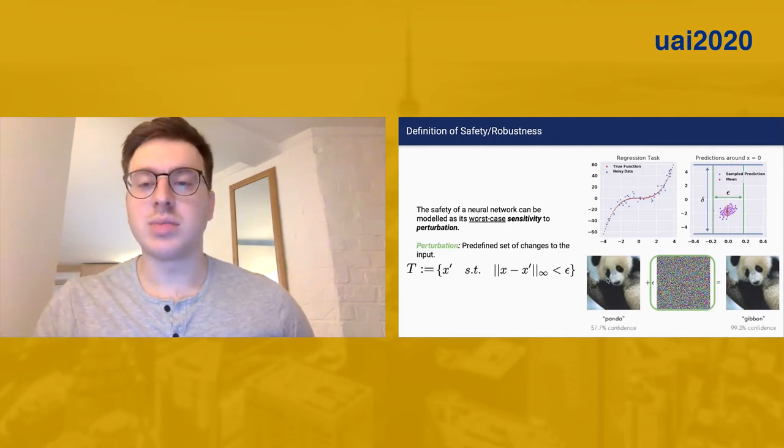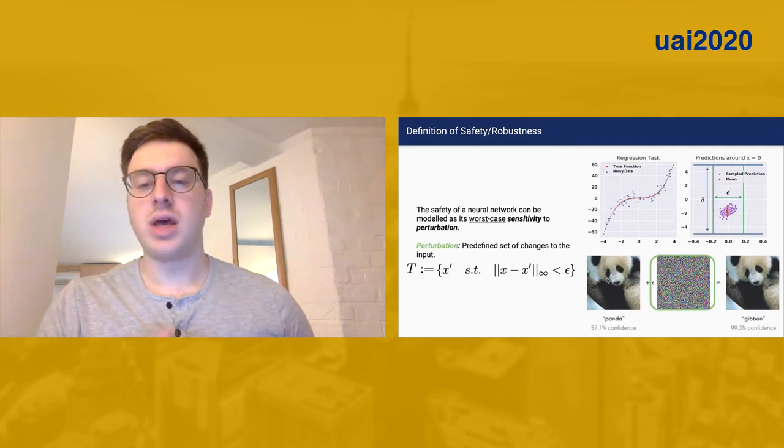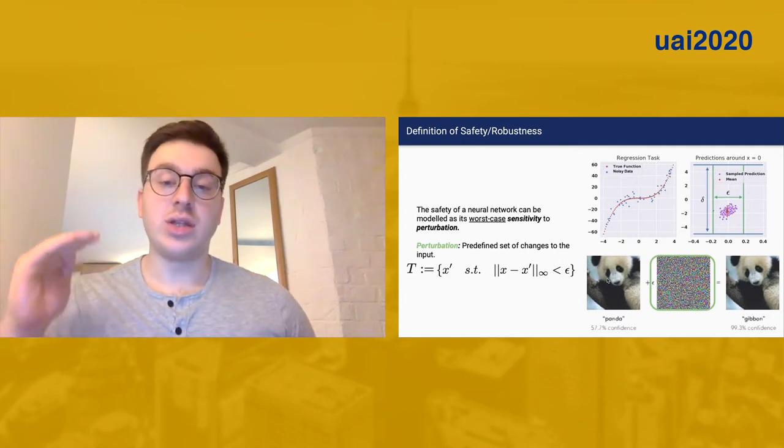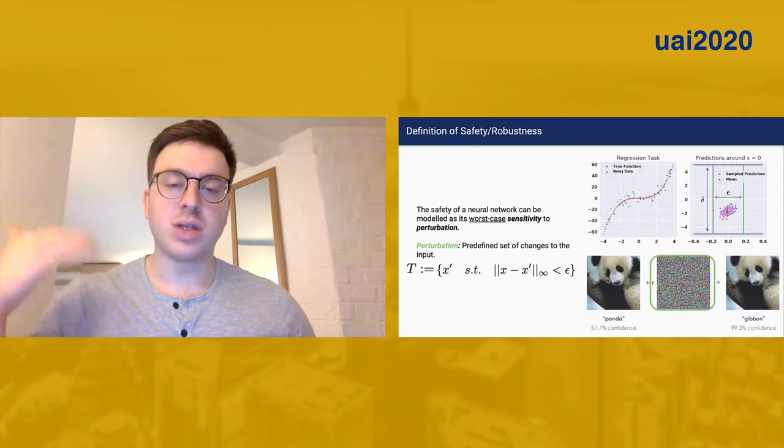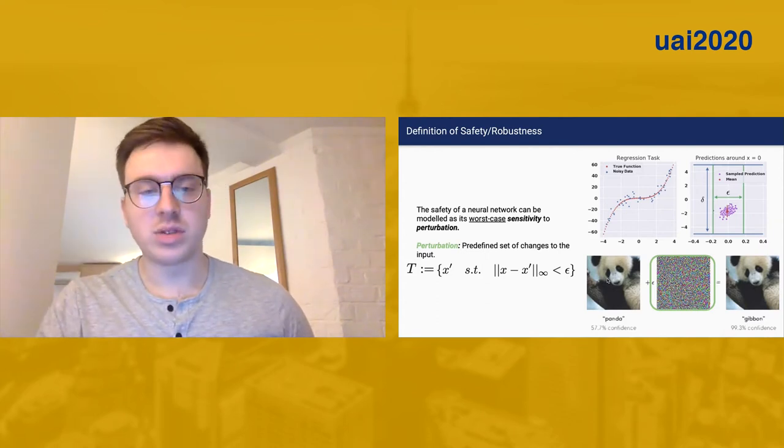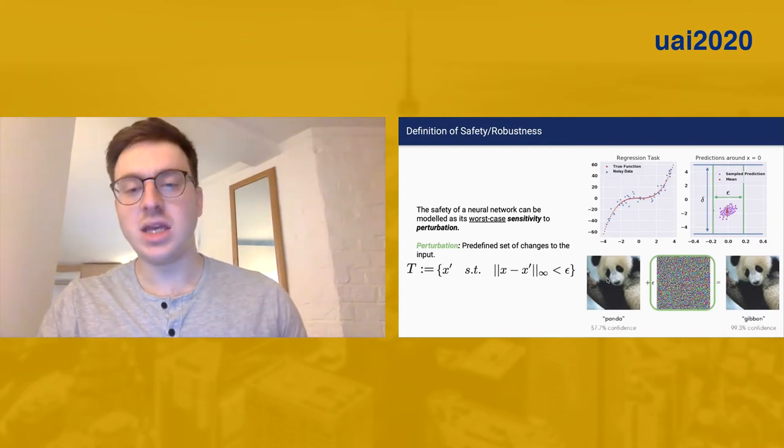So for every feature dimension of the BNN, an adversary can change the magnitude by either plus or minus some value epsilon. And given any input in this set,